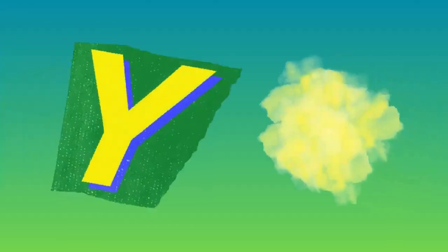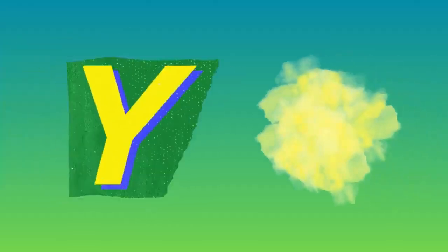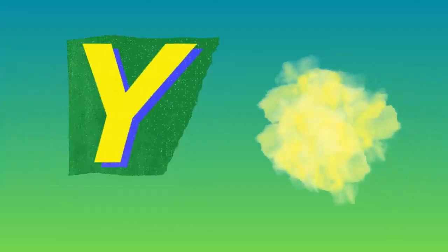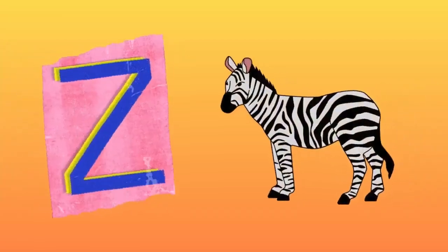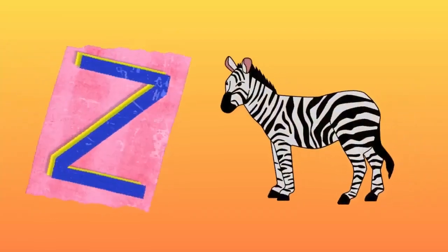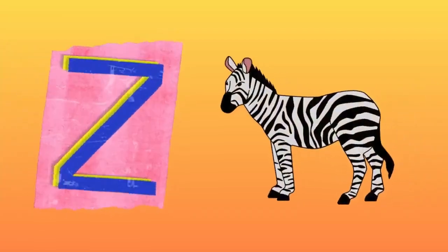Y is for yellow, y-y-yellow. Z is for zebra, z-z-zebra.